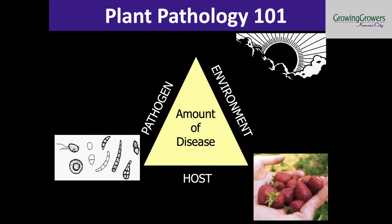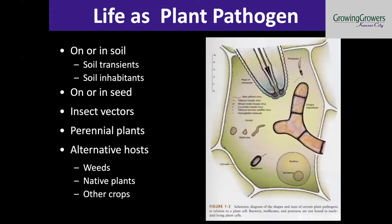So how do plant pathogens live in the agro-ecosystem? Really in all kinds of ways. When we're talking about plant pathogens, we're talking about bacteria, fungi, nematodes, and viruses. Looking at this picture on the right, this is the head of a plant pathogenic nematode. Nematodes are submicroscopic worms that live in water films essentially in the soil. There are also foliar nematodes that live on the leaves of plants.